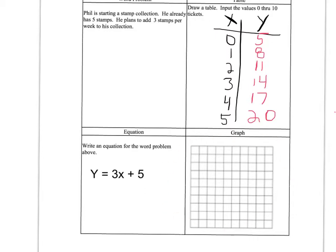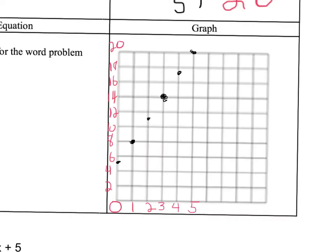Okay, as you see I've zoomed in on the graph to make it a little easier to read and to write on. Here are my data points. I have (0,5), (1,8), (2,11), (3,14), (4,17), and (5,20).